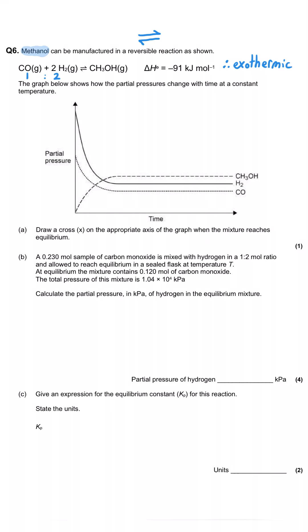The graph below shows how the partial pressures change with time at a constant temperature. We're asked to draw a cross on the appropriate axis of the graph when the mixture reaches equilibrium. The appropriate axis is the x-axis, because we're being asked for the time when equilibrium has been reached.